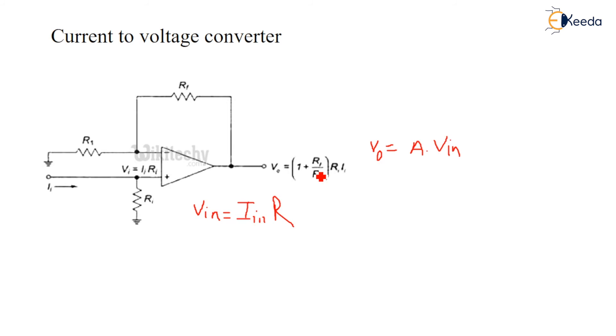So the application of this I to V converter is in photo detector or photo diode. We can connect the photo diode at the input side. This photo diode will change the light intensity. We know the basic principle of photo diode.